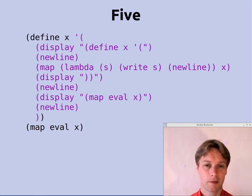Then it does this map lambda S, write S, new line X thing, which I'll talk about in a second. Then it prints a few closed brackets and new lines, and then it prints out that map eval bit that goes at the end, and then the new line.